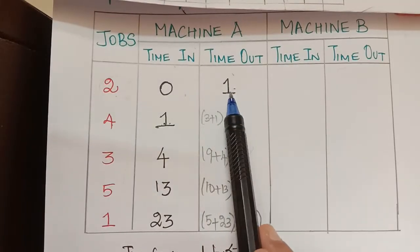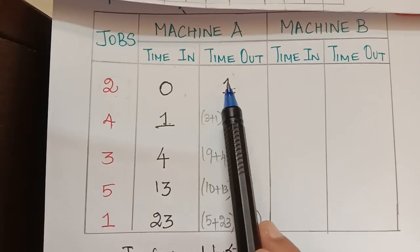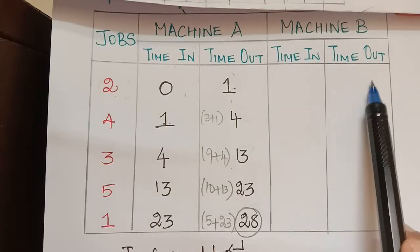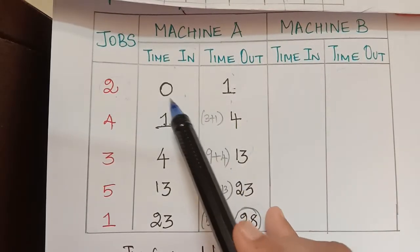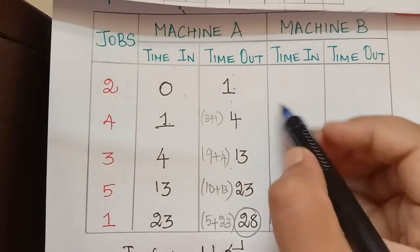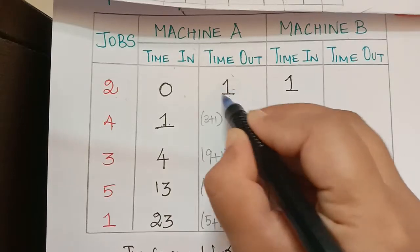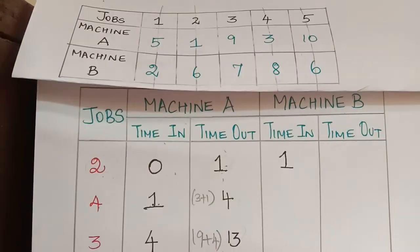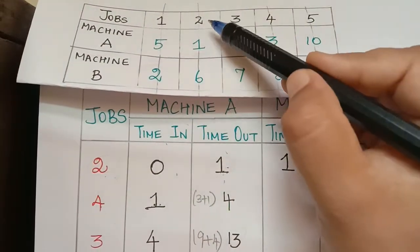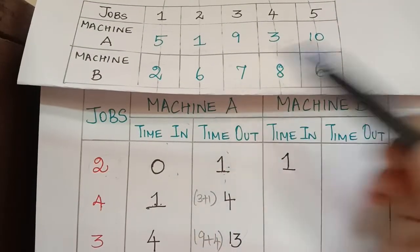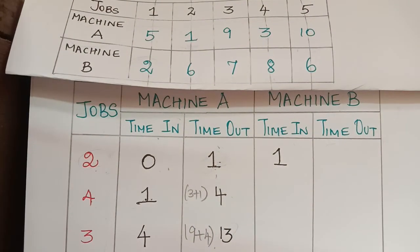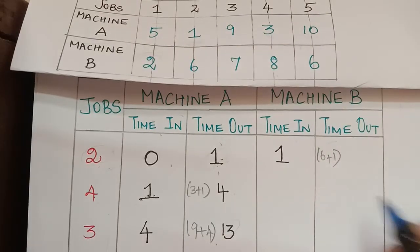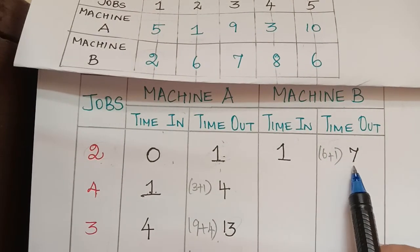Job 2 first entered machine A, worked there for 1 hour, and came out. After coming out it enters machine B. So in machine B, time in for job 2 is 1. Job 2 performs for 6 hours in machine B, so 6 plus 1 equals 7 — time out is 7.